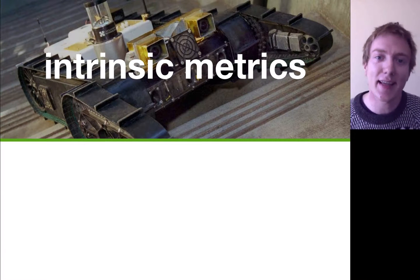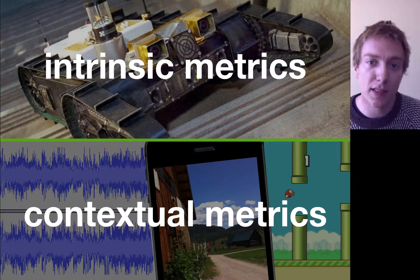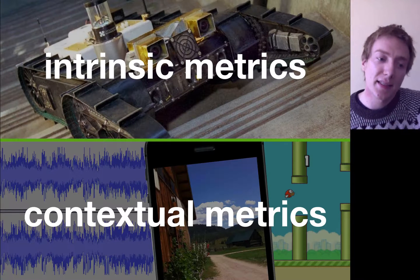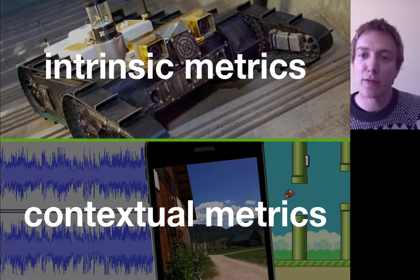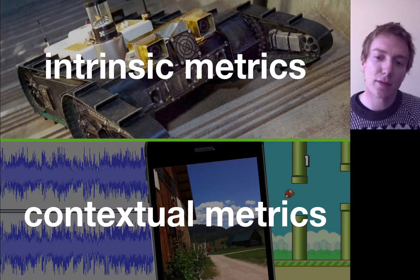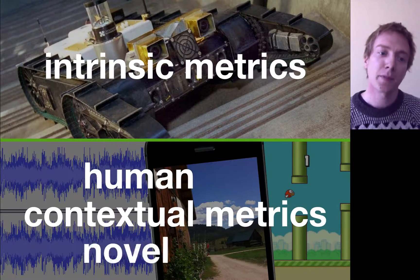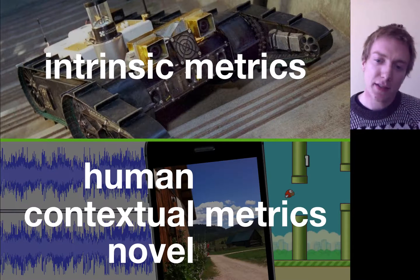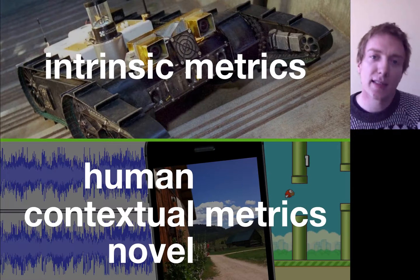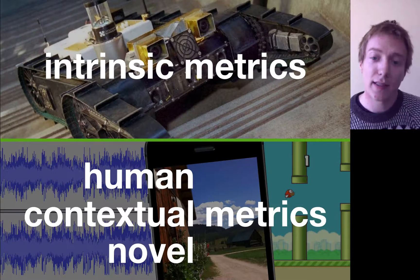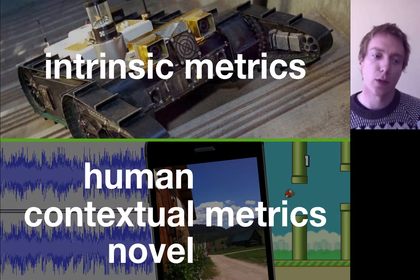There's another category that doesn't have an intrinsic notion of quality, and that's where some of the most exciting applications of approximate computing will come. Things where you might ask: does the music sound good, does the picture look clear, is the game fun? These applications have quality that isn't so easy to measure and doesn't come immediately with the problem domain. For that reason, the quality metrics that have to go with these programs need to be contextual — they need to take into account what humans actually think of the output.